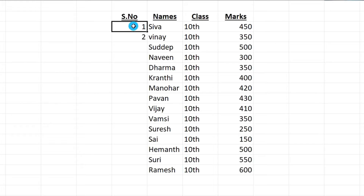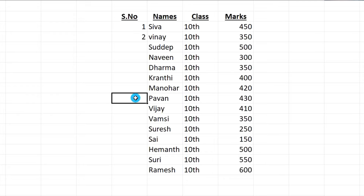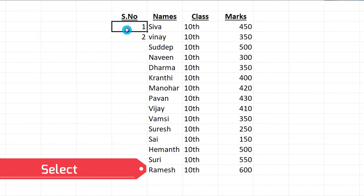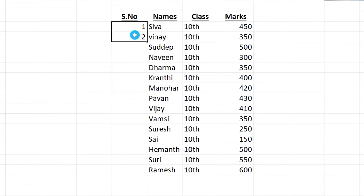First, you just enter two numbers — first enter and second enter. You can see the numbers automatically in Excel. First, second, then enter. After these two numbers, you can copy and drag — after this you can automatically see what Excel does.